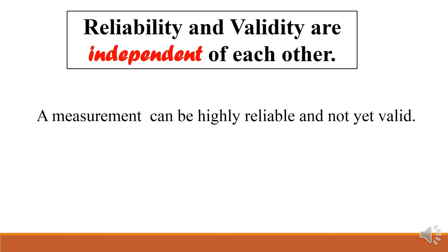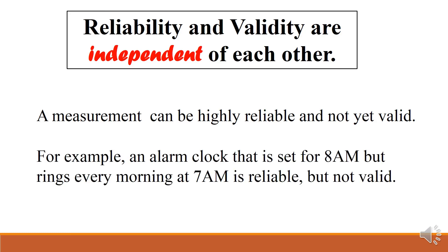A measurement can be highly reliable and not yet valid. For example, an alarm clock that is set for 8 a.m. but rings every morning at 7 a.m. is reliable, but not valid.